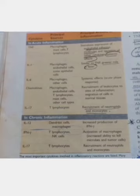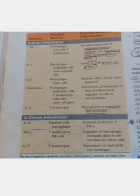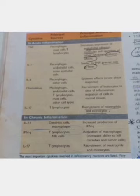In chronic inflammation, interleukin-12 is released from dendritic cells and macrophages and involves increased production of interferon gamma. Interferon gamma is produced from T-lymphocytes and natural killer cells and is involved in the activation of macrophages, meaning increased ability to kill microbes and tumor cells. Interleukin-17 is also produced from T-lymphocytes and is involved in the recruitment of neutrophils and monocytes, meaning interleukin-17 has a role in both acute and chronic inflammation.